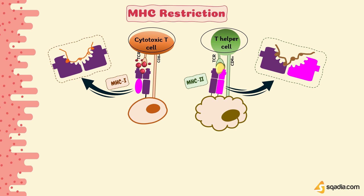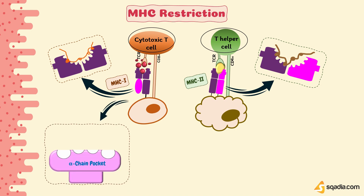For example, consider the alpha chain pocket of the MHC class 1 binding groove. There are 2 or 3 pockets in each MHC molecule that accept only particular amino acids. These are called anchor residues, and they differ for different MHC class 1 alleles, since each allele has a different sequence of the alpha chain. In most cases, the amino acids at positions 2 and 9 are crucial for binding — these are the anchor residues.